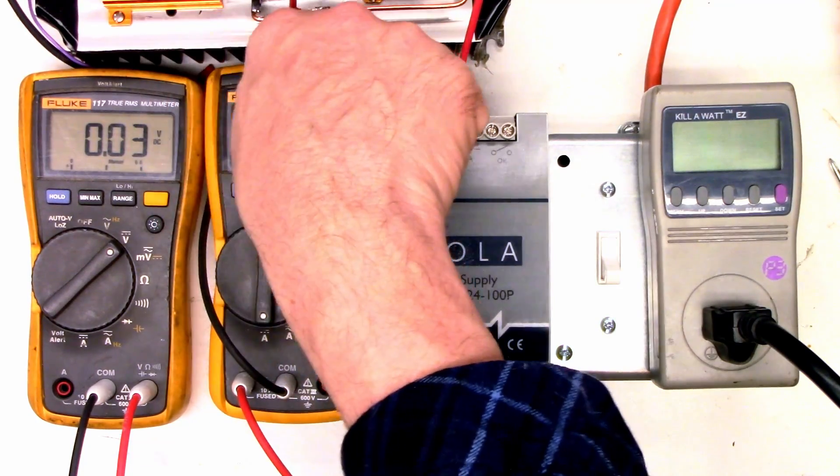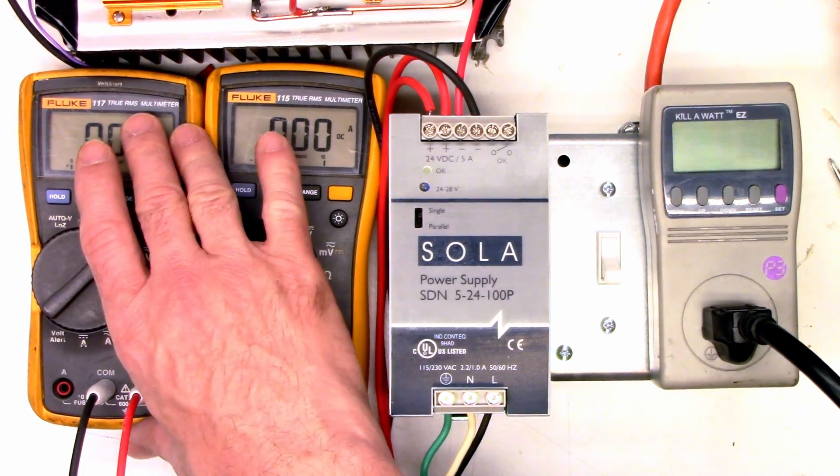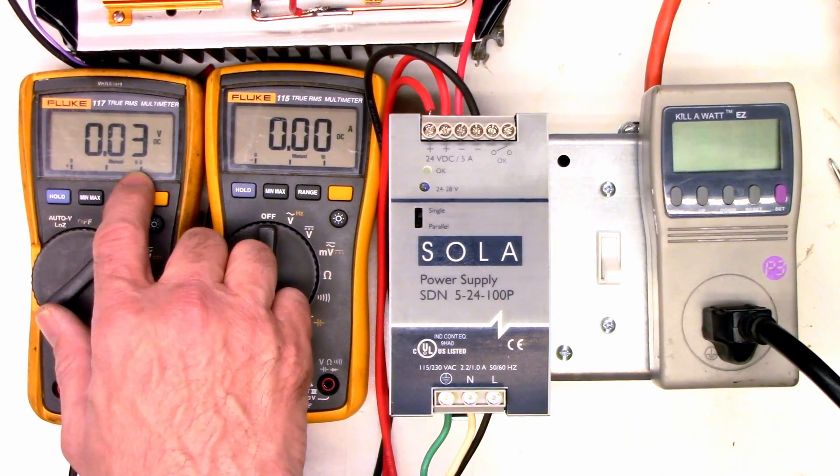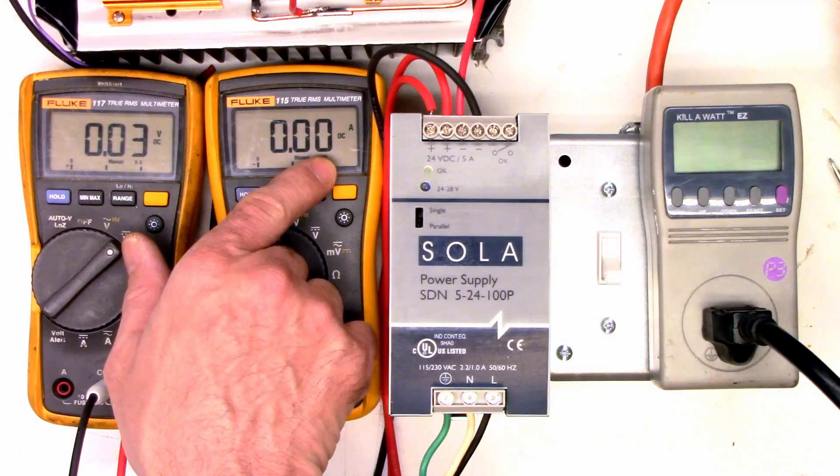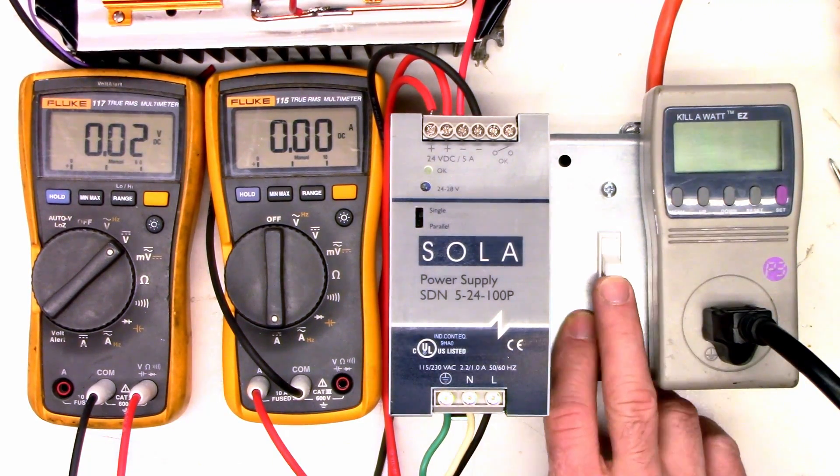I've got my dummy load set back in here. You probably can't see it, just barely see the heat sink right here. That's going to measure the amps output of the power supply, and this is going to measure the volts output of the power supply, the 117. I've got this on 60 volt range. This is on a 10 amp scale. Right now I've got no load on it whatsoever.